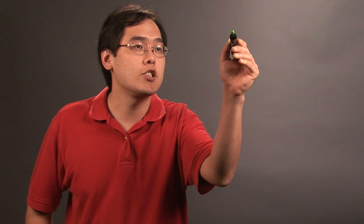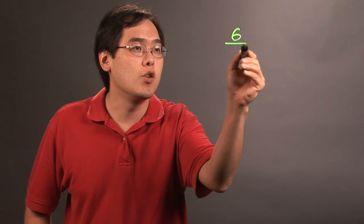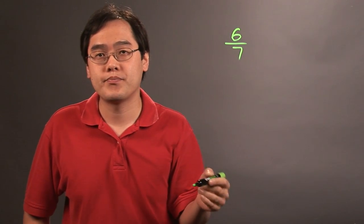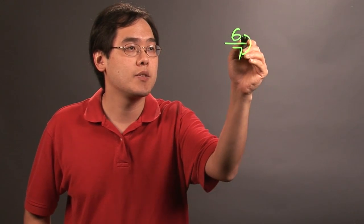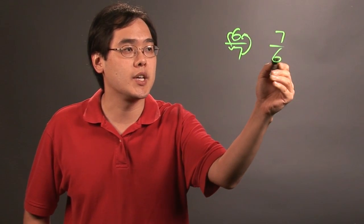So for example, if you have, let's say, 6 over 7, when you reciprocate the fraction, you're just flipping it. So the 7 and the 6 switch places, so it becomes 7 over 6.